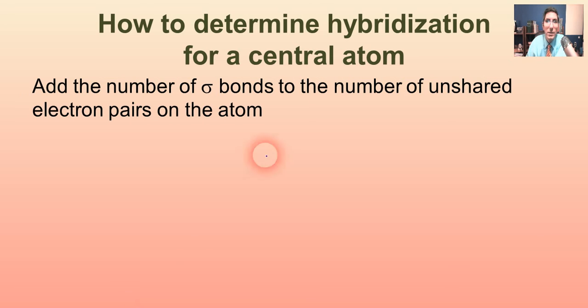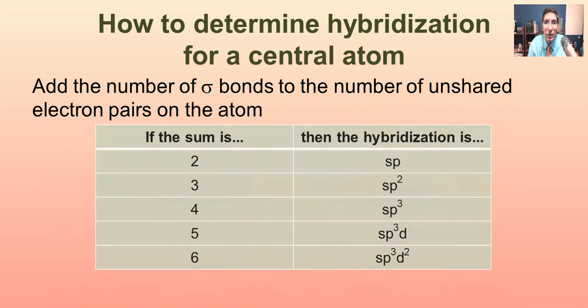We're going to take the number of sigma bonds that are attached to that central atom. We learned about sigma bonds in the last video. We're going to add that to the number of unshared electron pairs that are on that atom, and we're going to get a number between two and six most likely. And if the number that you get is a two, the hybridization is SP. If the number is three, it is SP2. If the number is four, it's SP3.